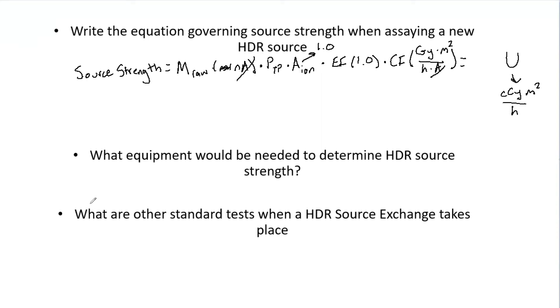And then for the electrometer, similarly, you could use the Standard Imaging Max 4000. So those are two of the most popular pieces of equipment for this type of source exchange.